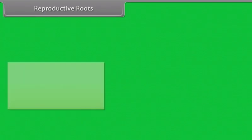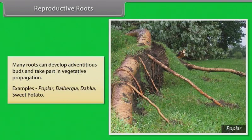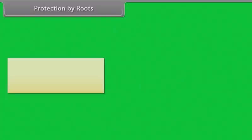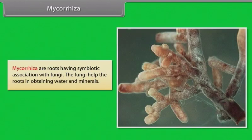Reproductive roots: Many roots can develop adventitious buds and take part in vegetative propagation. Examples: Populus, Dalbergia, dahlia, sweet potato. Protection by roots: Root thorns and root spines present in certain plants are protective devices against animals and excessive loss of water. Mycorrhiza: Mycorrhizal roots have a symbiotic association with fungi; the fungi help the roots in obtaining water and minerals.